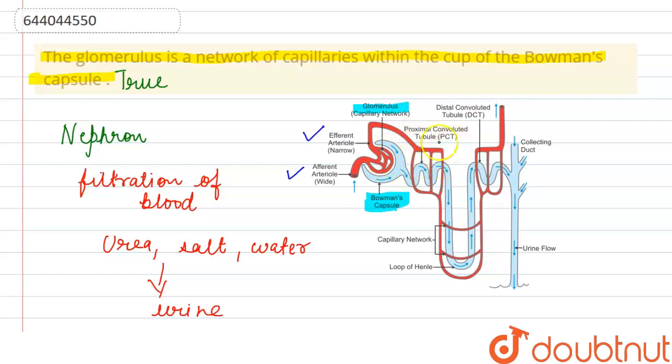After that, the movement will be through the proximal convoluted tubule (PCT), then after that loop of Henle, then the distal convoluted tubule, and after that the urine will be collected into the collecting duct where the urine flow will be formed. This is all the pathway that the urine formation will follow.